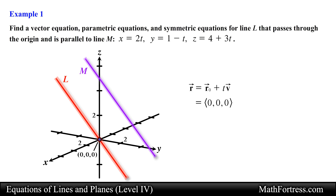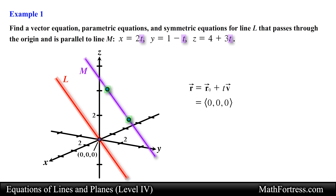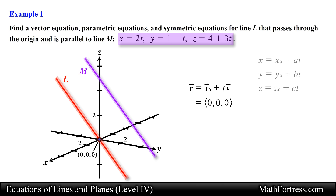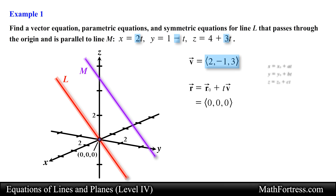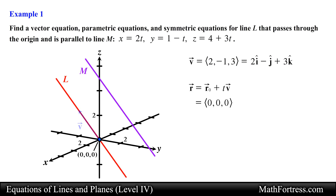To determine a vector parallel to line M, we use the parametric equations of line M. We can generate two random points on line M by choosing two distinct values for the parameter t, or alternatively we can find a parallel vector by inspection. Recall that the direction numbers of a parametric equation represent the components of a vector parallel to the line. In this case the parallel vector has components 2, negative 1, and 3, written in unit vector form as 2i minus j plus 3k. We will use this vector to write the vector equation of line L.